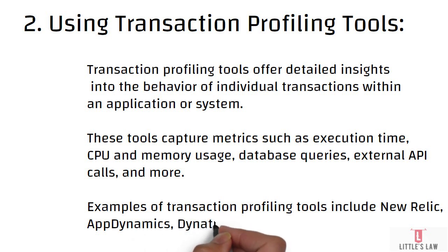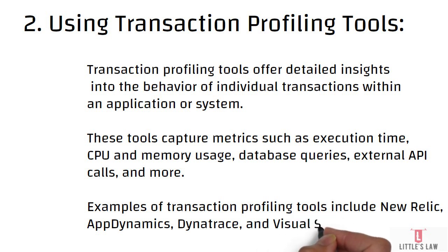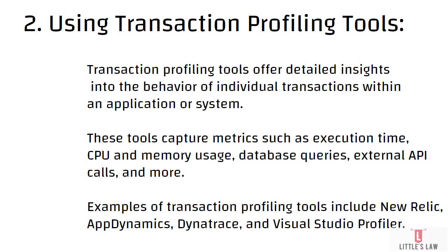After transaction tracing, analysis, and error monitoring, we perform dependency analysis. New Relic offers dependency maps and traces which help visualize dependencies between different components and services within our application architecture, giving a 360-degree view. This helps analyze dependencies to identify performance bottlenecks — mainly latency issues — and areas for optimization, including the impact of external services, databases, APIs, and third-party integrations on transaction performance. Finally, we leverage New Relic's custom insights and NRQL features to create custom dashboards, reports, and alerts for specific performance monitoring needs.